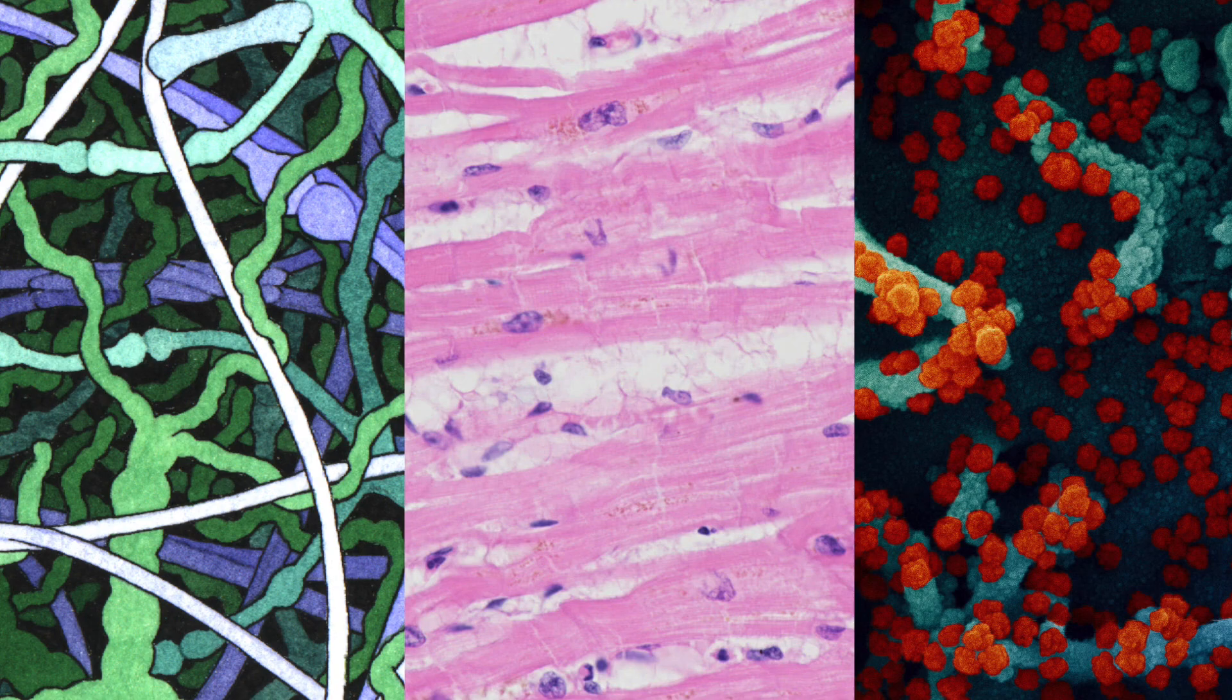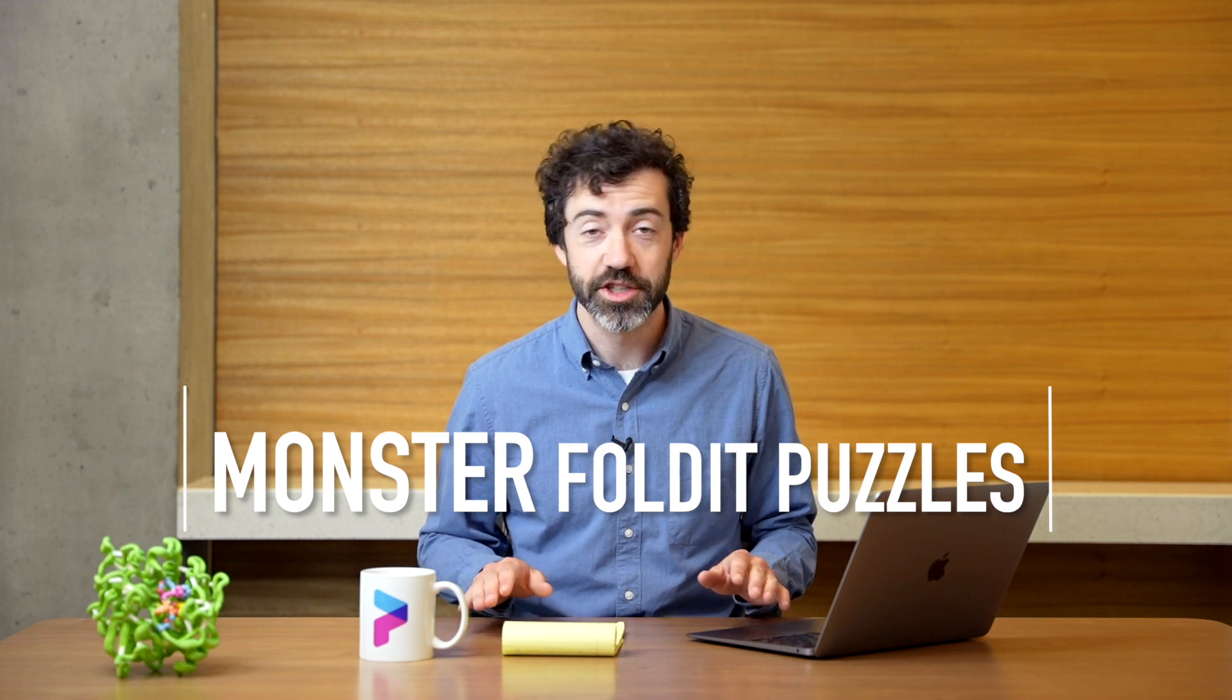Of course, the problem is that most electron density maps are for big proteins, sometimes with more than 1,000 amino acids. Over the coming months, we'll be ramping up to some monster Foldit puzzles. The challenge being to fold hundreds of residues into bigger and bigger electron density maps.